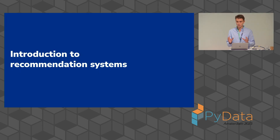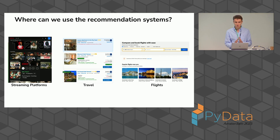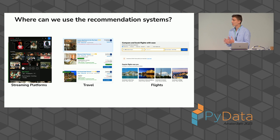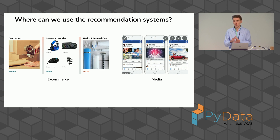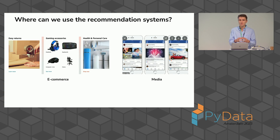I'm sure that everyone knows how recommendation systems work, but let's do a little introduction. The first question is: where can we use recommendation systems? The short answer is that we can use them in any place — streaming platforms, travel, flights, Booking.com, e-commerce, media, social networks, everything. Each business domain requires a specific approach and specific recommendation system model.